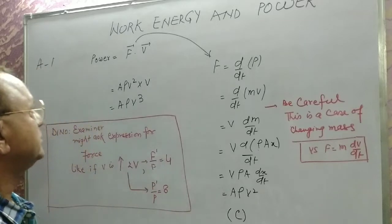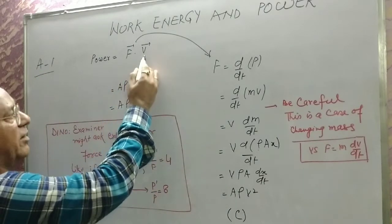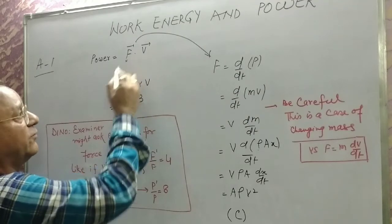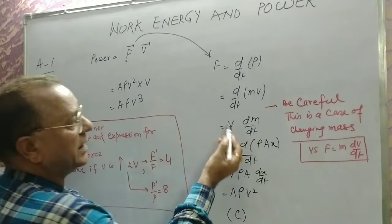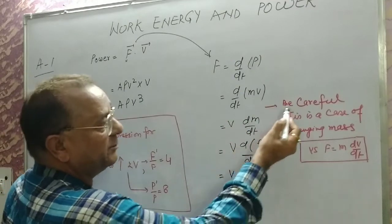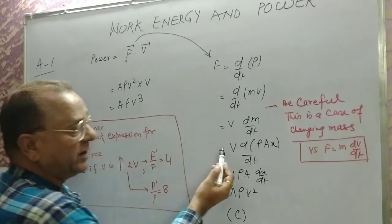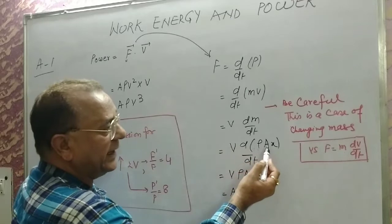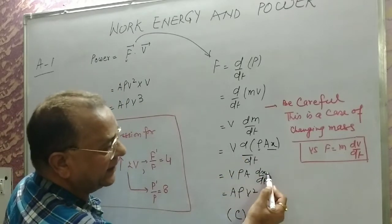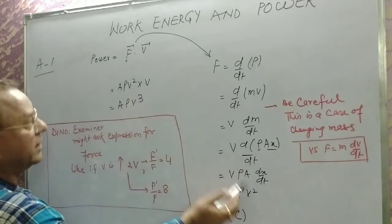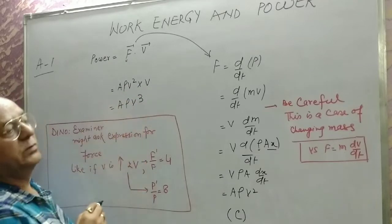Let us take question number one. Power is force dot product velocity. In this case force is F = dp/dt = d/dt(mv), where V is constant — what is changing is the rate of change of mass. Normally F = m·dv/dt, but here velocity times d(ρAx)/dt gives A·ρ·V², where ρ is density and A is area. Putting this in place of F: power = ρAV² × V = ρAV³.